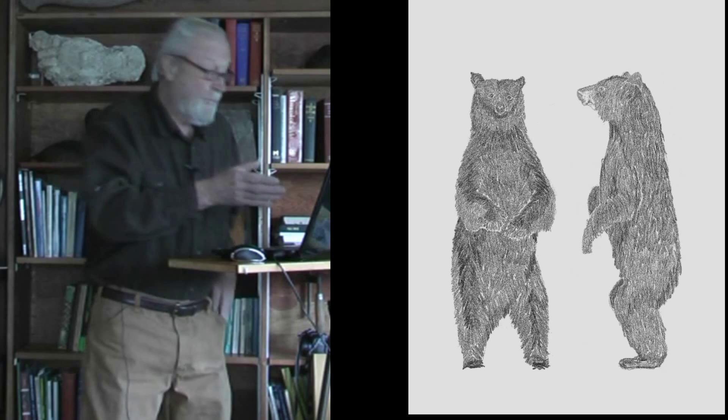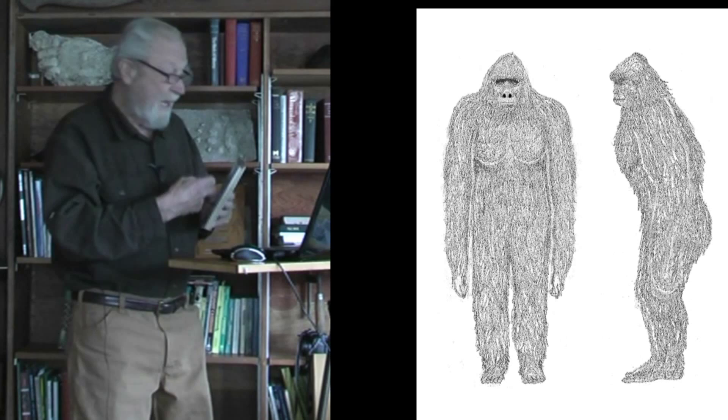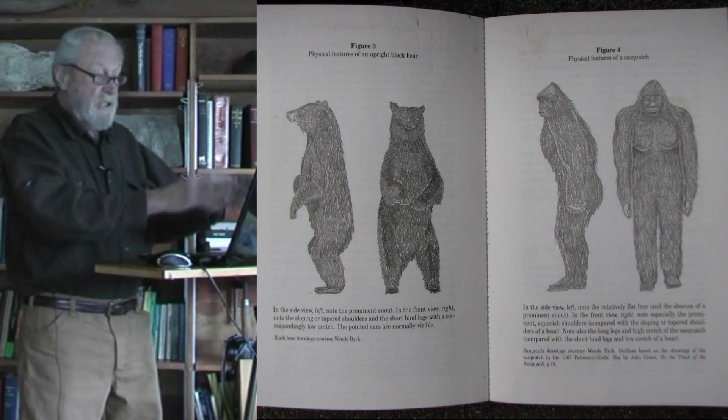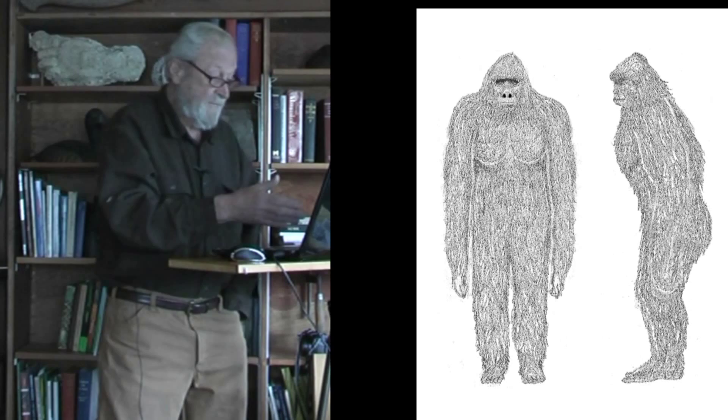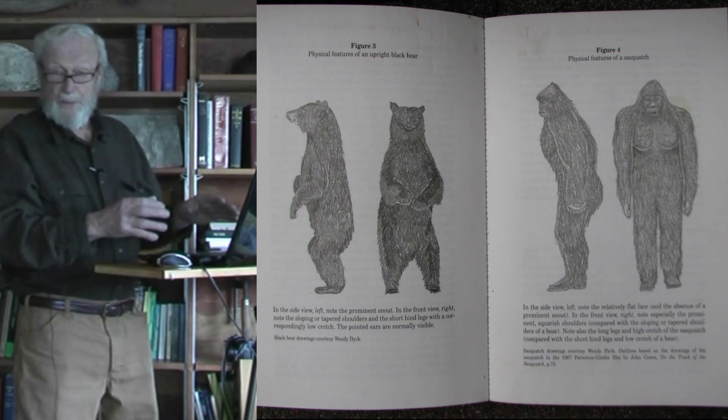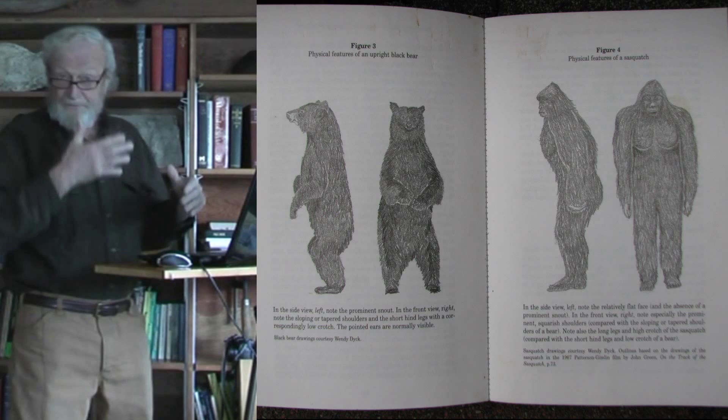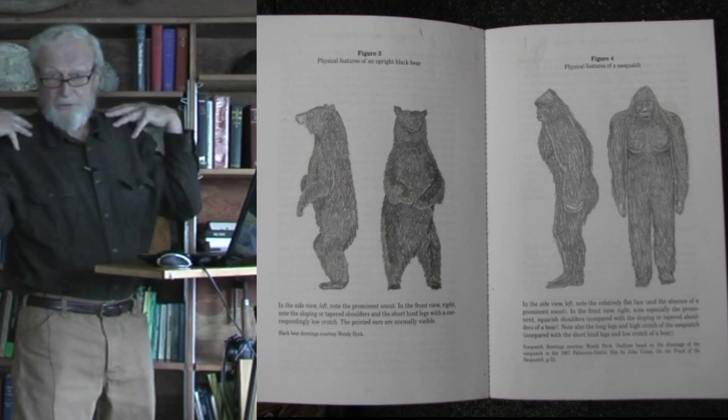What's missing from our field guides still today is this image here of a Sasquatch, front view, side view, which really needs to be put on a facing page with an upright bear so that we can see that the Sasquatch has a flat face, not the prominent snout of the bear. The Sasquatch has broad shoulders, which, although it makes it appear much more human-like, certainly makes it much less bear-like.